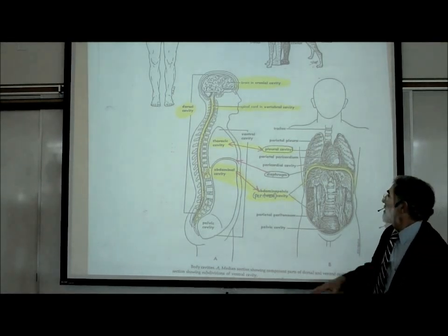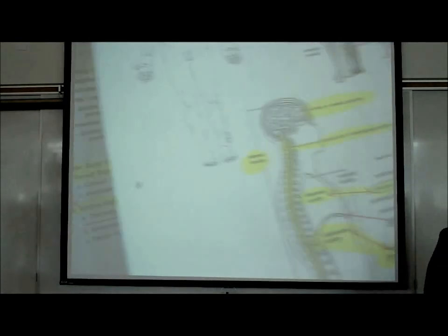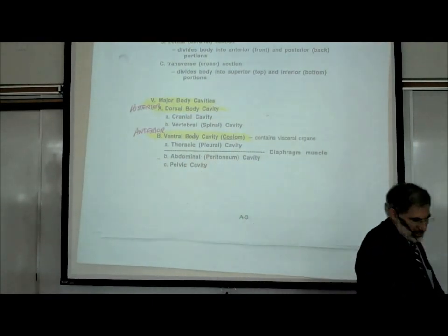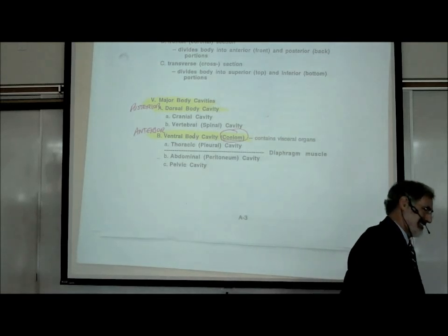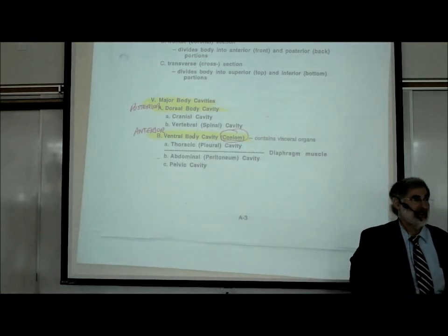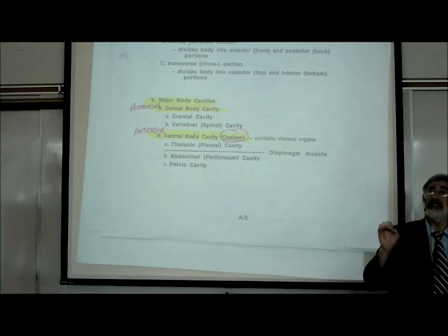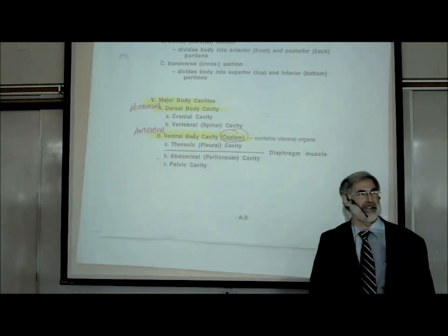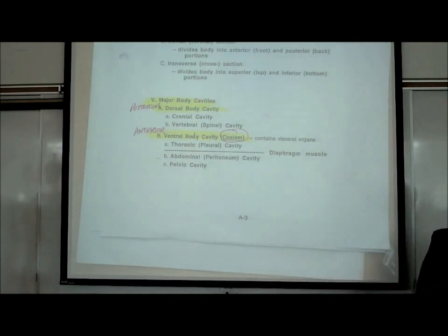Another name for the ventral body cavity is the coelom — back on page A3. You may have heard that term in majors biology covering comparative vertebrate anatomy, where animals are categorized as acoelomates, pseudocoelomates, and eucoelomates. That's how they categorize the extent to which the structure of this ventral body cavity exists.